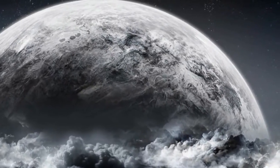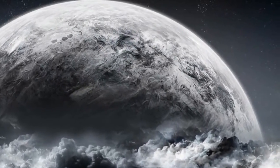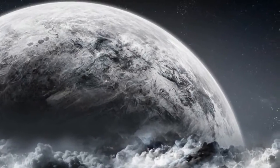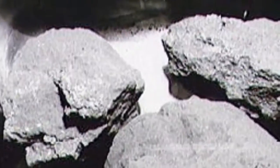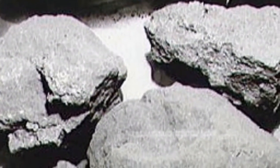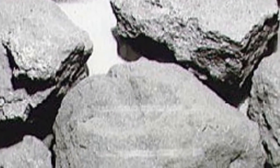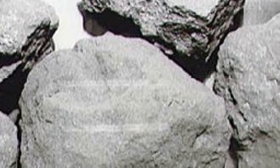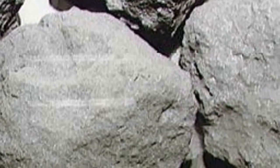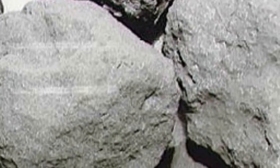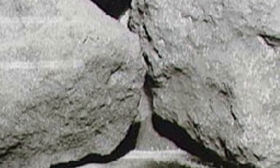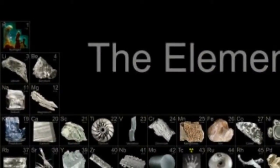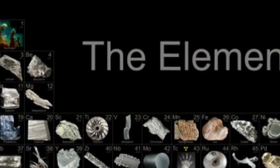According to mainstream scientists, the Earth and the moon are the same age, but according to the facts this is not true. Some moon rocks are as old as 5 billion 300 million years old, and others are as old as 20 billion years. The Earth itself is said to be 4 billion 600 million years old.